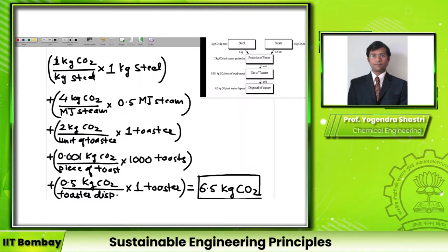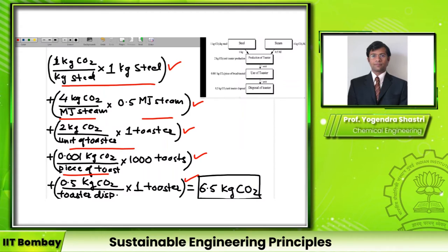So this is now the life cycle emission or the inventory. What we have done here is simply a summation. We calculated the emissions at each stage — steel manufacturing, steam production, toaster production, actual toasting, and disposal — each in terms of CO2, and then did a simple addition. That gave us the total number of 6.5 kg CO2. This is one example of how you can do a simple life cycle inventory calculation.